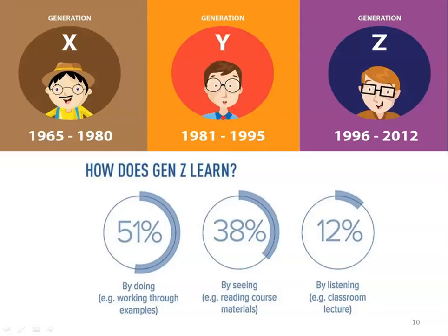Regarding Generation Z: there are three generations of people available today. Generation X born between 1965 to 1980, Generation Y from 1981 to 1995, and Generation Z from 1996 to 2012. Students currently in college were born between 1996 and 2012. The majority of teachers are Generation Y (1981–1995), or experienced faculty from Generation X (1965–1980). So X and Y generation people are teaching Z generation students.